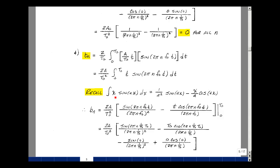Recall from calculus that the integral of x sine of ax dx is 1 over a squared, sine of ax, minus x over a cosine ax. Again, in our case, x is equal to t, and a is equal to 2 pi n f0. And then b sub n is equal to 2a over t0 squared.